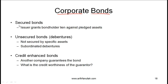One important term is secured bonds. With a secured bond there is some collateral — the bond issuer grants the bond holder a lien against pledged assets. This lien means that if the issuer does not make payments, the bond holder has the legal right to sell the pledged assets or collateral to recover the money. Secured bonds give a comfort and safety factor to the bond holder.